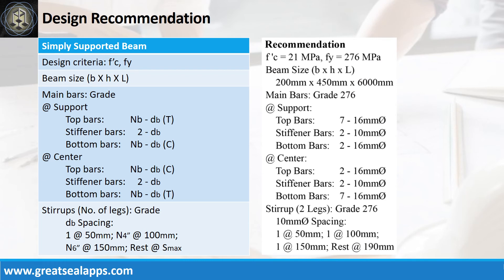Design recommendation: f'c equals 21 MPa, fy equals 276 MPa, beam size is 200 mm by 450 mm by 6000 mm. Main bars grade 276 — at support: top bars 7 pieces 16 mm bar, stiffener bars 2 pieces 10 mm bar, bottom bars 2 pieces 16 mm bar. At center: top bars 2 pieces 16 mm bar, stiffener bars 2 pieces 10 mm bar, bottom bars 7 pieces 16 mm bar. Stirrups: 2 legs, grade 276, 10 mm bar, spacing 1 at 50 mm, 1 at 100 mm, 1 at 150 mm, rest at 190 mm.